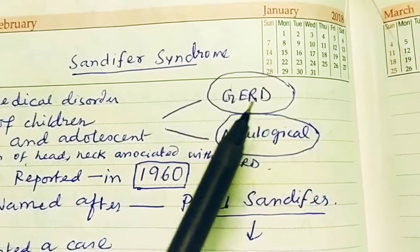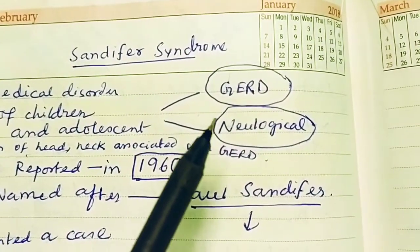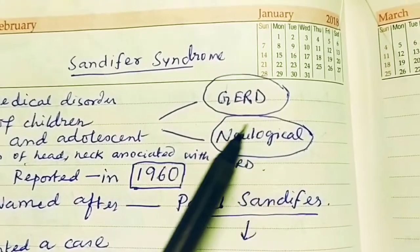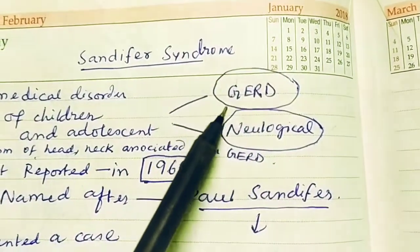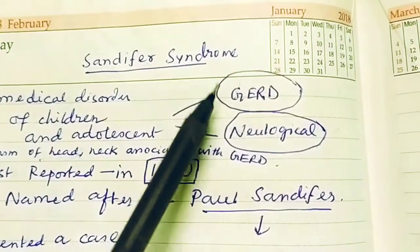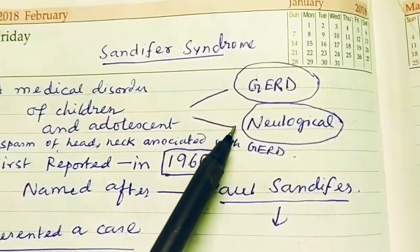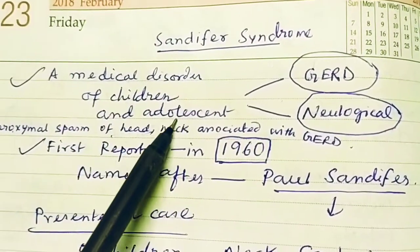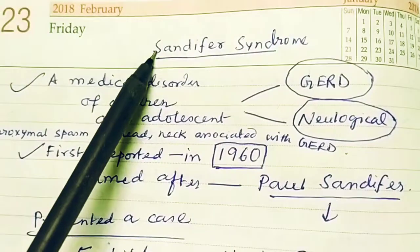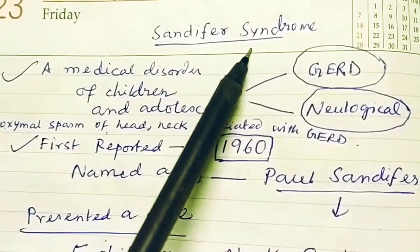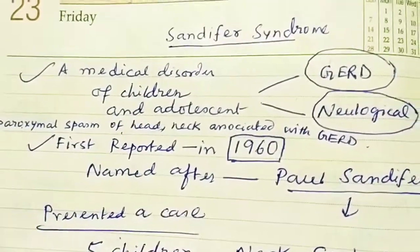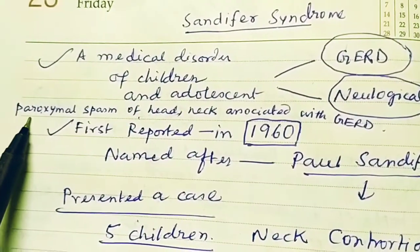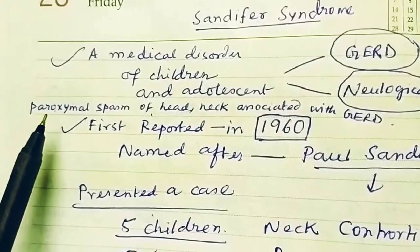GERD (gastroesophageal reflux disorder) occurs along with neurological symptoms like seizure-like phenomena. When GERD and this neurological phenomenon are combined together in children and adolescents, it is called Sandifer Syndrome.